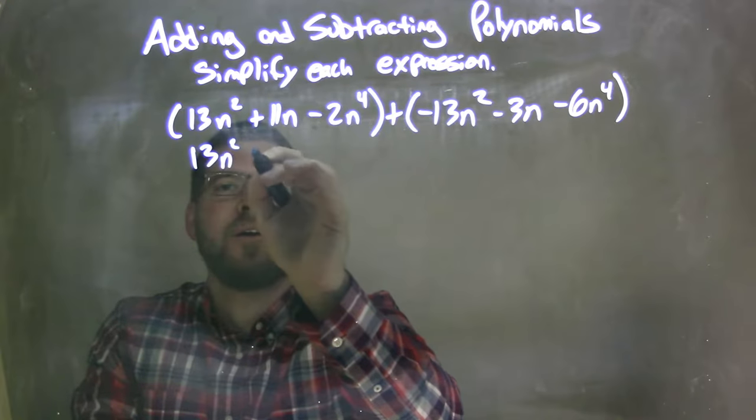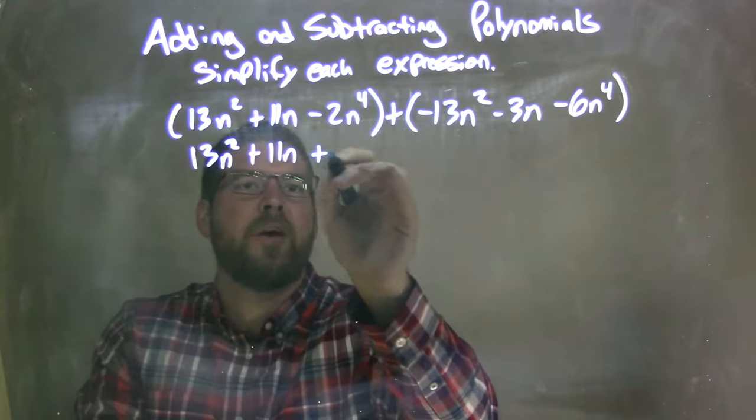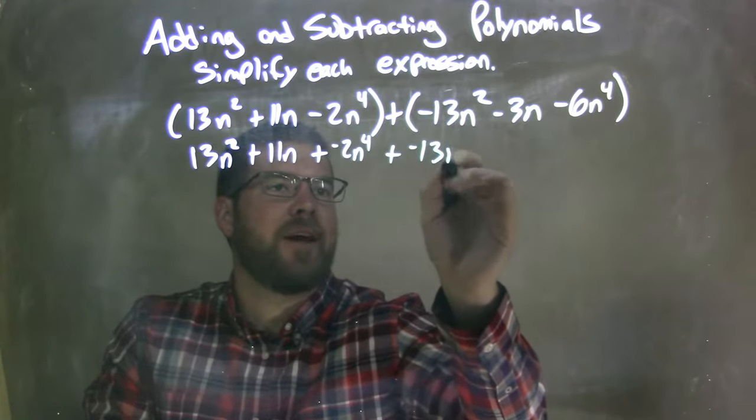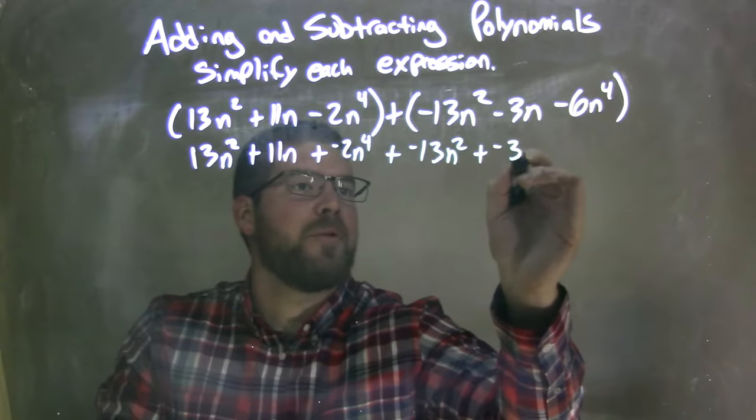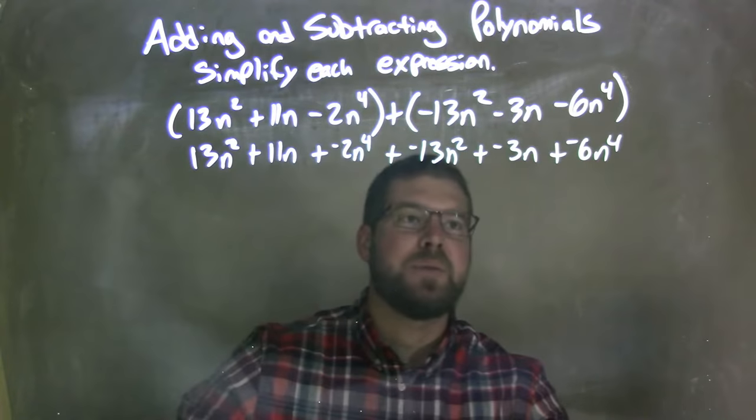So we have 13n squared plus 11n, and we don't need the parentheses anymore because it's all in addition, plus a negative 2n to the fourth plus a negative 13n squared plus a negative 3n plus a negative 6n to the fourth, making all those subtractions be adding a negative.